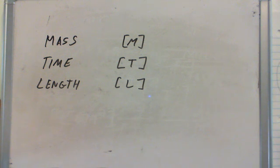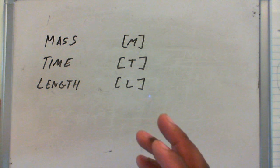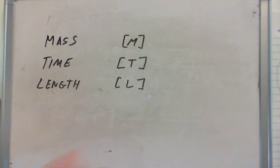Dimensional analysis and unit analysis are different. Unit analysis only can convert a length into a length, but dimensional analysis can change a length to a time or whatever.